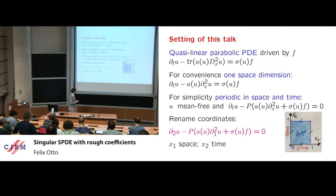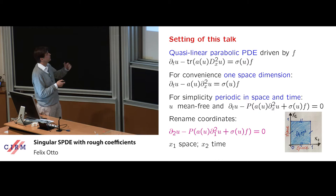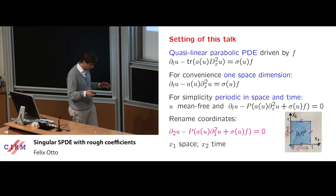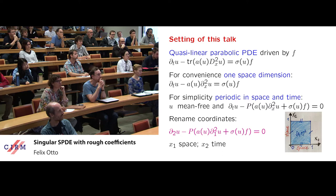I will use notation from one spatial dimension for simplicity, but at least for the deterministic part this is just mere convenience — everything can be extended to multiple space dimensions, and U could be a system. We make a more substantial simplification by introducing periodic boundary conditions, not just in space but also in time, which allows us to use convolutions in both variables.